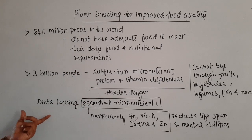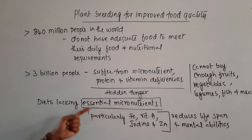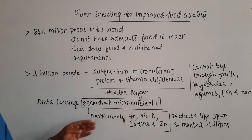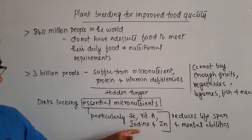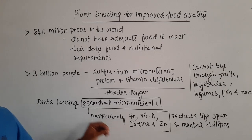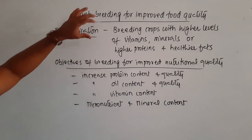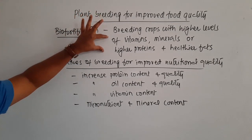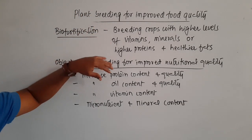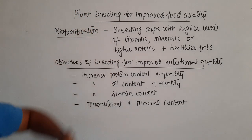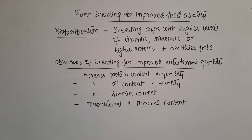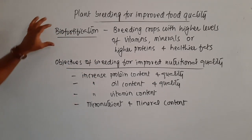When diets lack essential micronutrients — particularly iron, vitamin A, iodine, and zinc — this obviously reduces lifespan and mental abilities. We are developing crops with higher levels of vitamins, higher levels of minerals, higher protein content, and healthier fats.